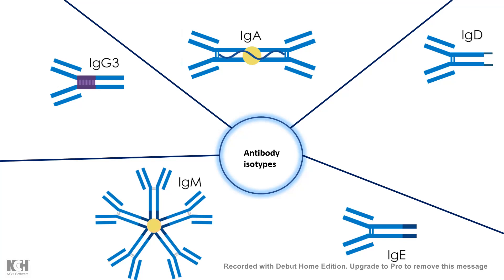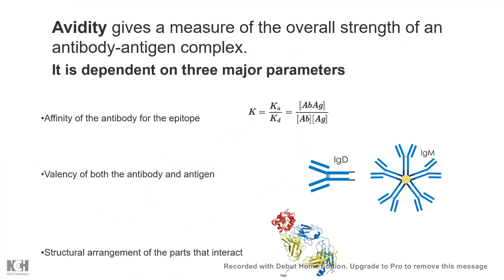At a macroscopic level, an antibody can have multiple different antigen binding sites. For example, IgA has four antigen binding sites, while IgM has ten. The overall interaction across all of these potential antigen binding sites is collectively known as avidity. We can simply understand avidity as affinity measured at a macroscopic level.